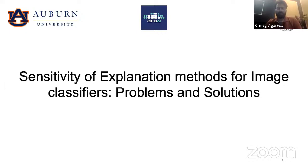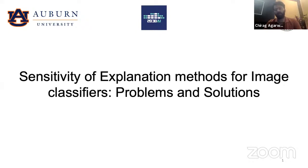Just a brief introduction: I completed my PhD last year. The topic for my thesis was Robustness and Explainability in Deep Neural Networks. Currently I'm a postdoc researcher at Harvard. The works I'll be presenting today were done as an intern during my visit at Auburn University in the fall of 2019. The broad topic for discussion today is sensitivity of explanation methods for image classifiers, their problems, and some solutions to them.